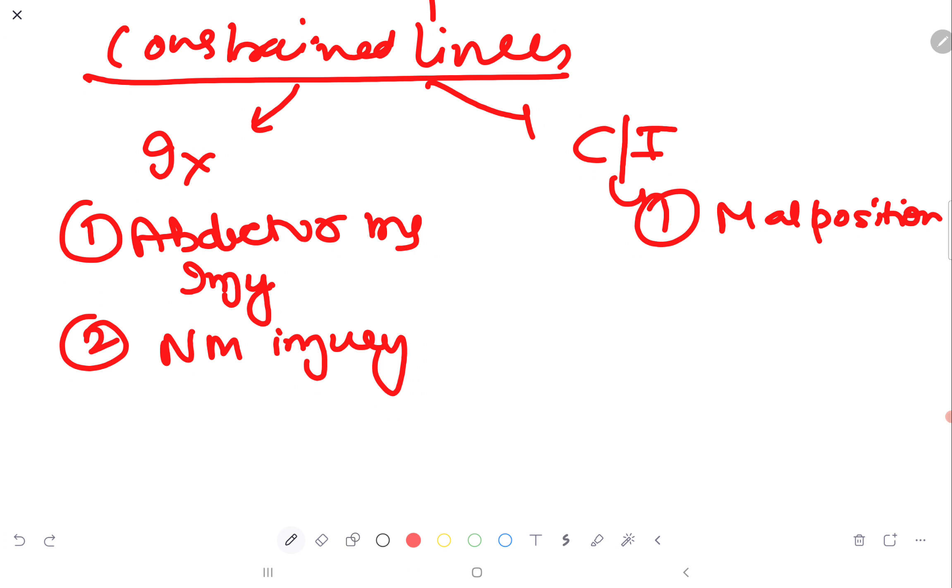Now we will discuss the use of constraint liners. Constraint liners are used in the abductor muscle injuries and neuromuscular injuries. Contraindicated in the malposition.